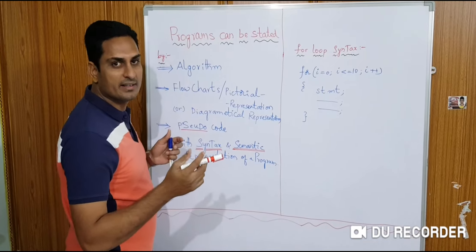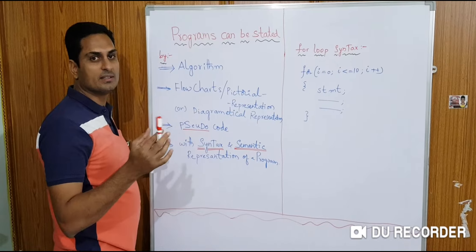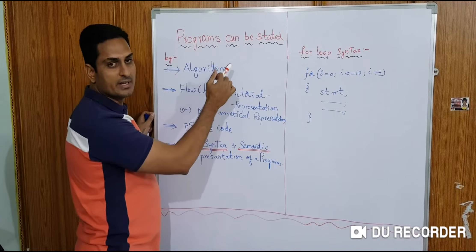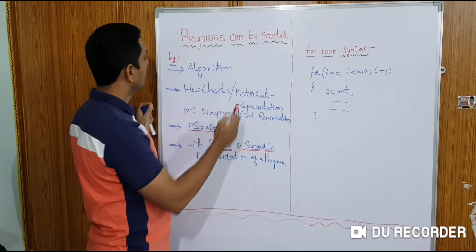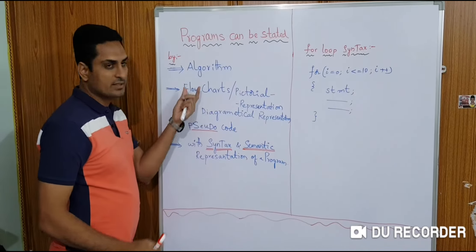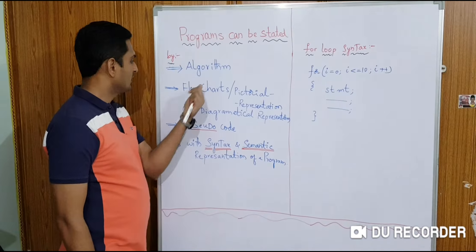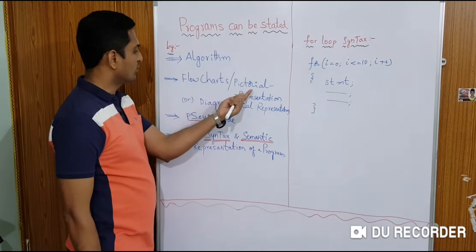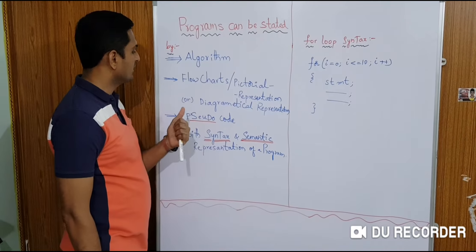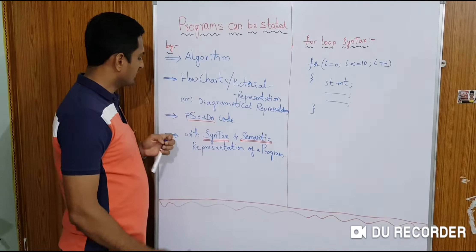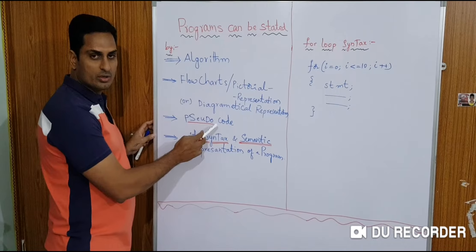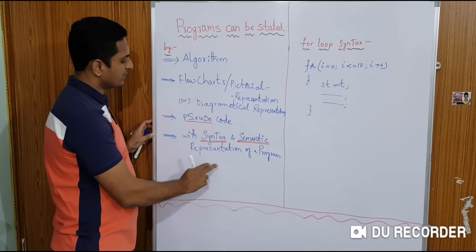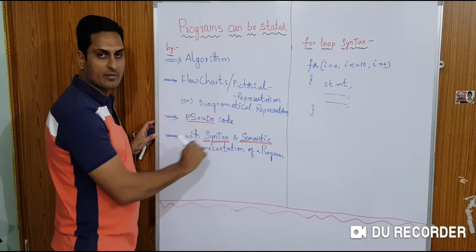Hi everybody, I am Prasad. Today our topic is how a program can be expressed in some ways. The first one is algorithm, the second one is flowcharts, which are a pictorial or diagrammatical representation. Next one is pseudocode, and the last one is with syntax and semantic representation of a program.